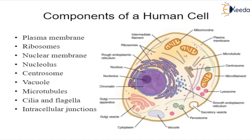Plasma membrane. The plasma membrane is the outer lining of the cell. It separates the cell from its environment and allows material to enter and leave the cell. Ribosomes are organelles that process the cell's genetic instructions to create proteins. These organelles can float freely in the cytoplasm or be connected to the endoplasmic reticulum. Ribosome size is measured in Svedberg S-units.